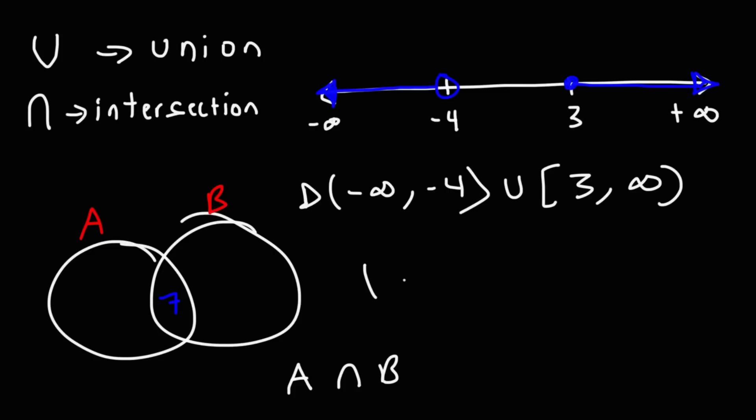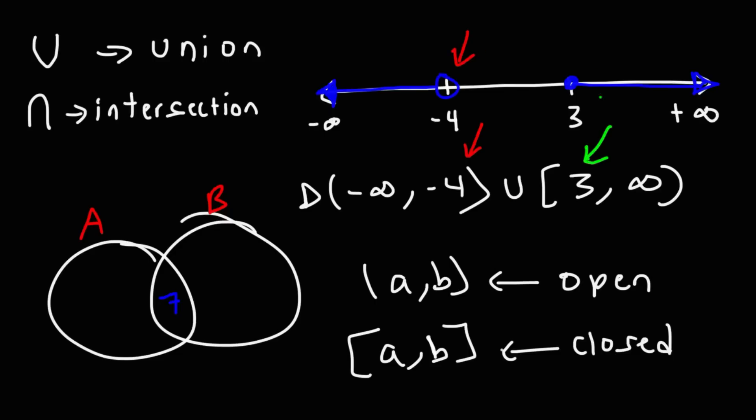Now the next symbol that we need to talk about is this. The interval A to B, using parentheses, this is an open interval. Now using brackets, this interval from A to B, that's a closed interval. So notice what we did with negative 4. Because we had parentheses, we used an open circle. Whereas for 3, we had a bracket. So we used a closed circle, because 3 is on the interval, negative 4 is not. So that's the difference between an open interval and a closed interval.